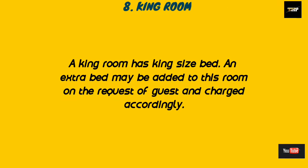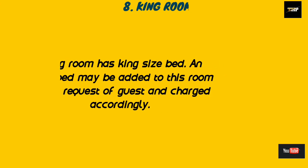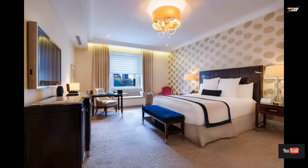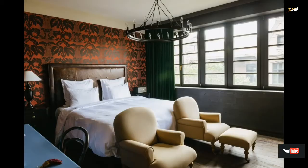The next is the king room. A king room has a king size bed. An extra bed may be added to this room on the request of guests and charged accordingly. The king bed size is six feet by six feet, and it is normally a big bed.